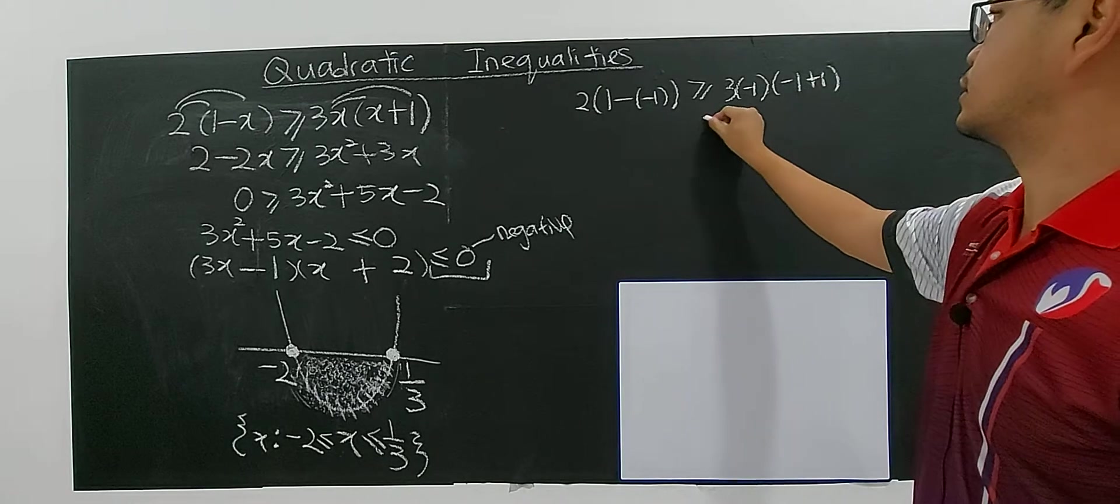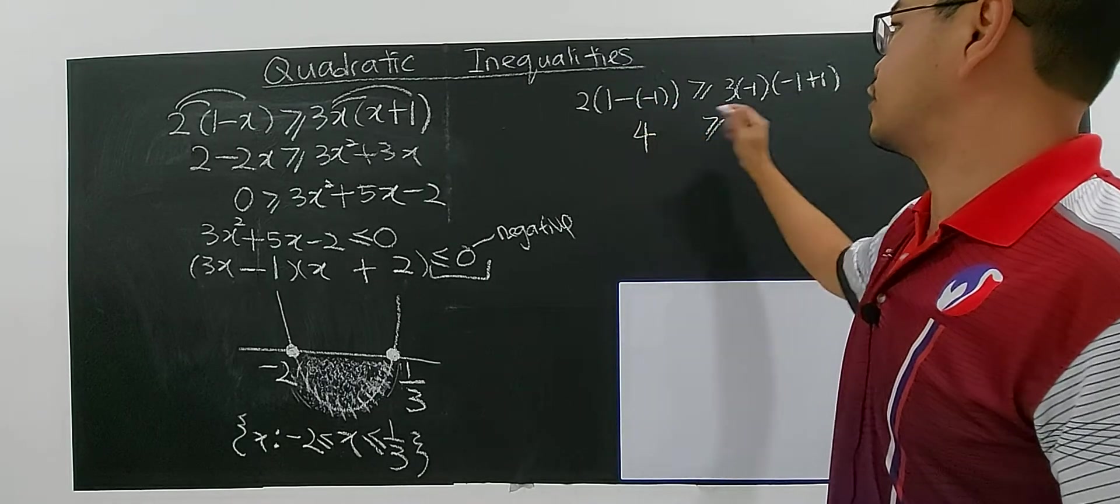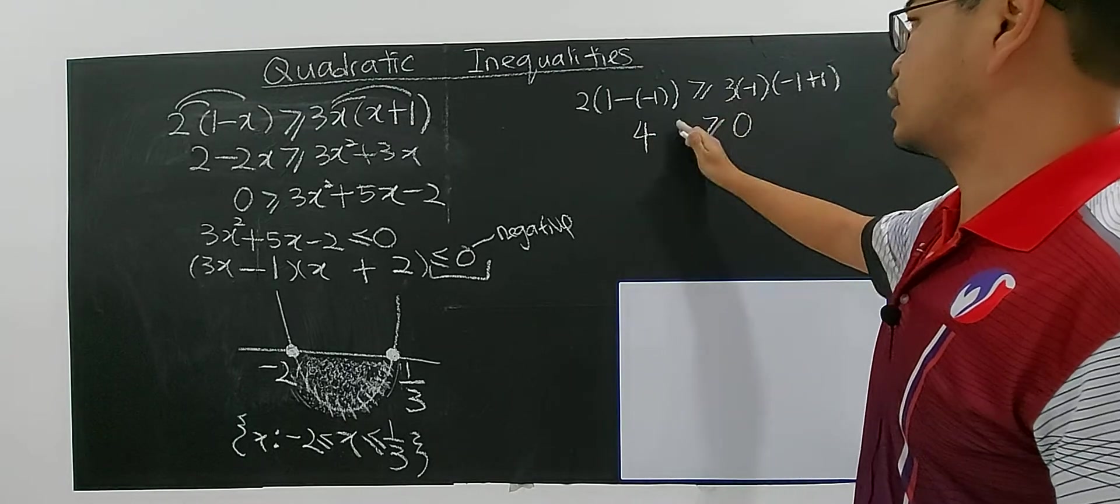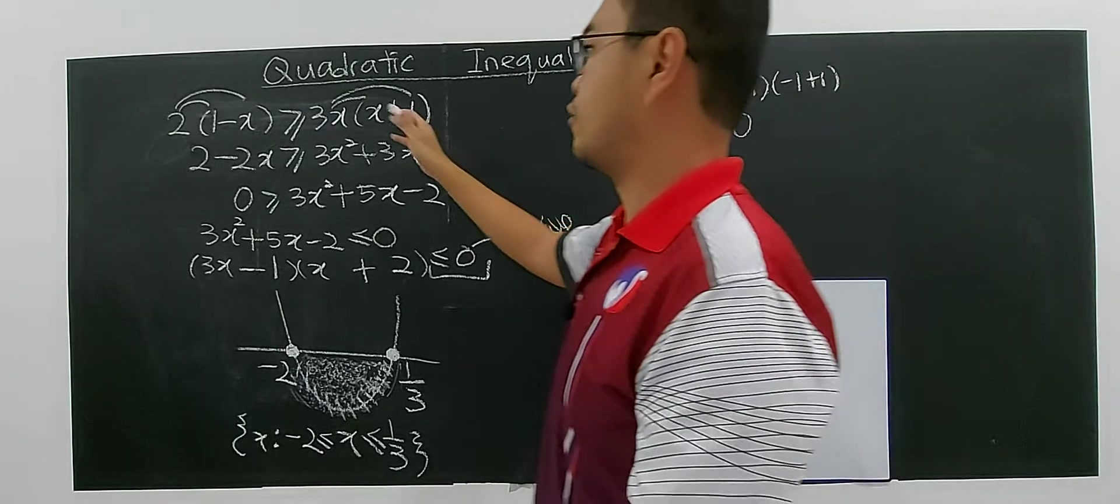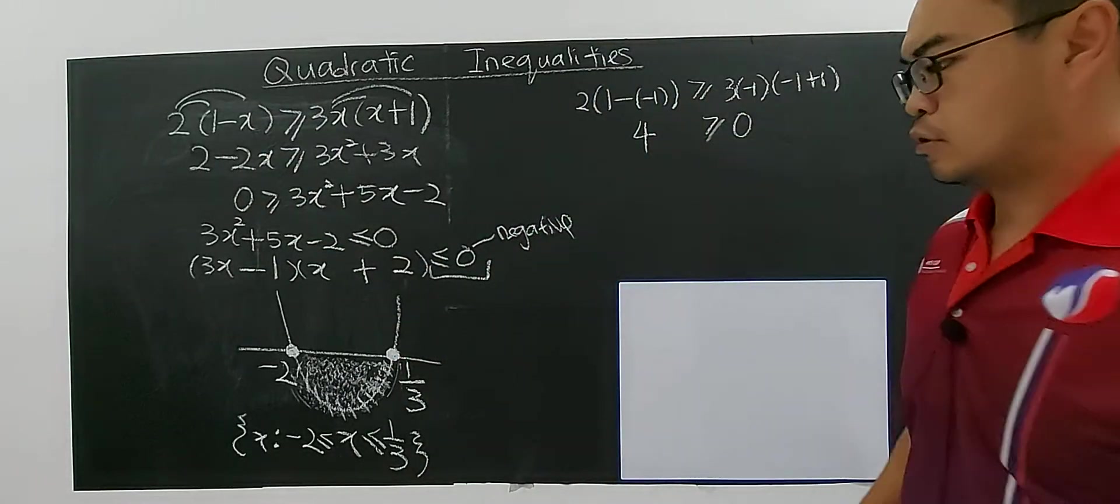This side, you will get zero. You get zero. And this one, you will get two, four. Four definitely more than zero. Not equal also. As long as more than zero, it's satisfied. If you put it will be greater than zero.